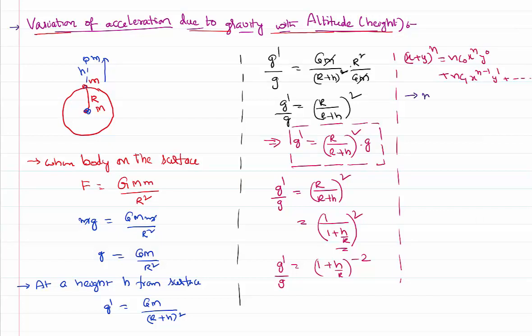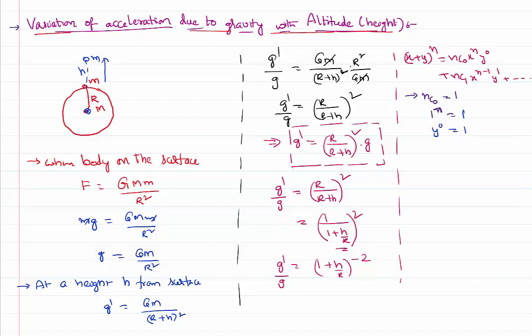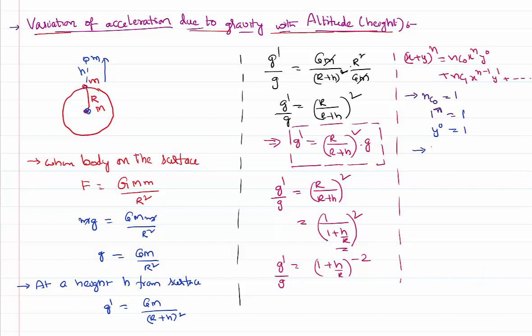In this case, nC0 is 1. x power n is 1 power n, and 1 power anything is equal to 1. y power 0, anything power 0 equals 1. So the first term in this case becomes 1. nC1 equals n.